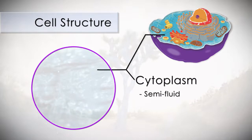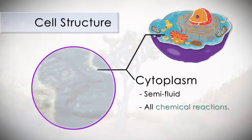Cytoplasm is a semi-fluid inside the cell, like our blood. It is where all chemical reactions take place in the cell.